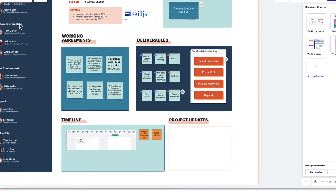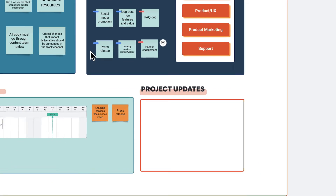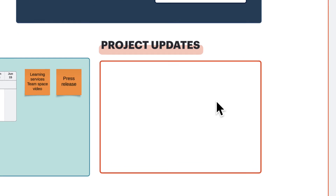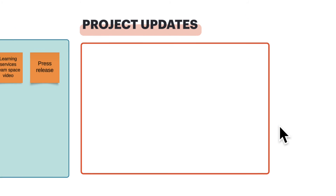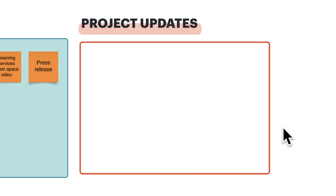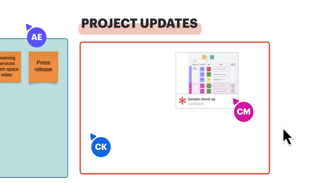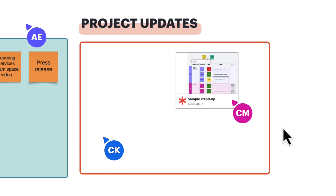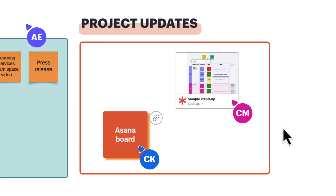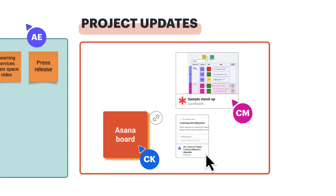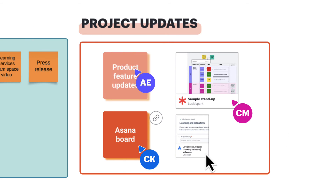The project updates frame is to communicate everyone's progress on the project and should be addressed at every team sync. This is where you'll include links to your scrum ceremony boards, meeting documents, links to task management platforms, and samples of work.